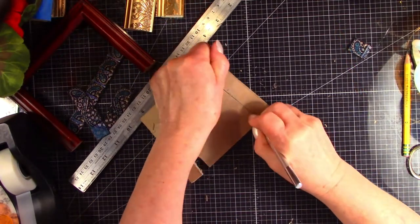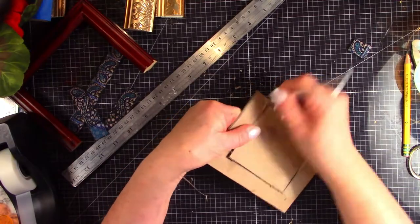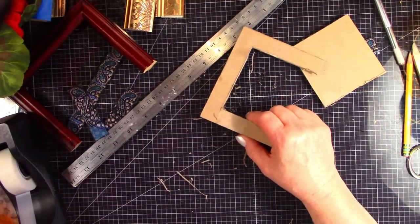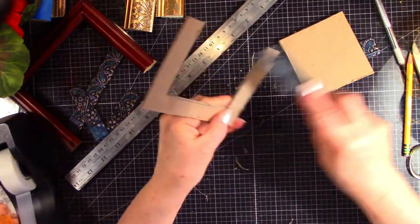Save all your smaller chipboard pieces, those can be used for making furniture. Emery boards are perfect for sanding small items.